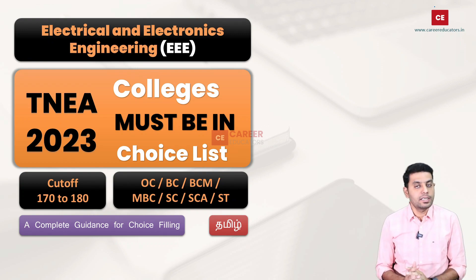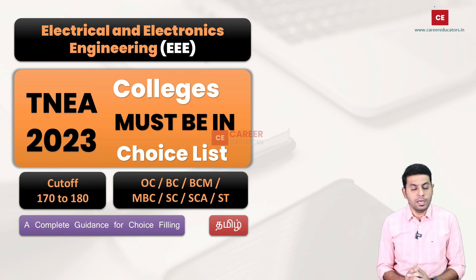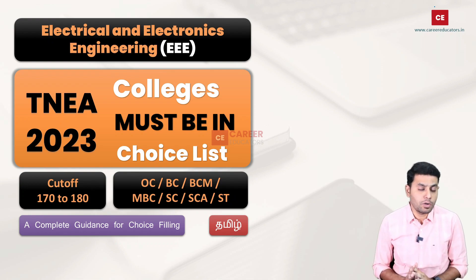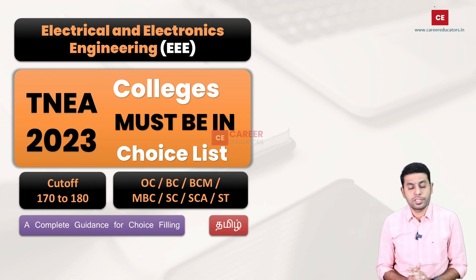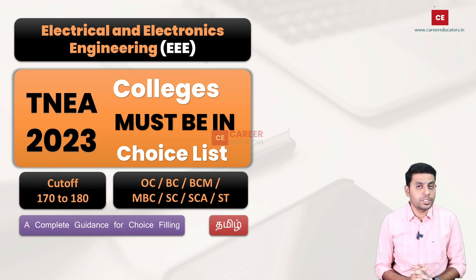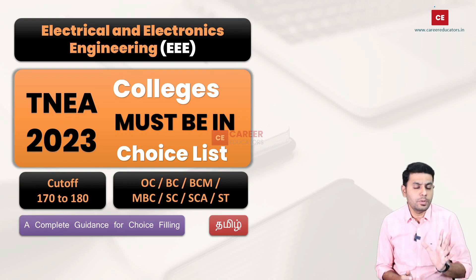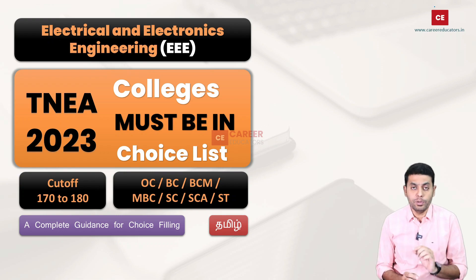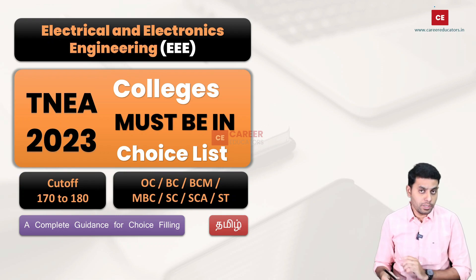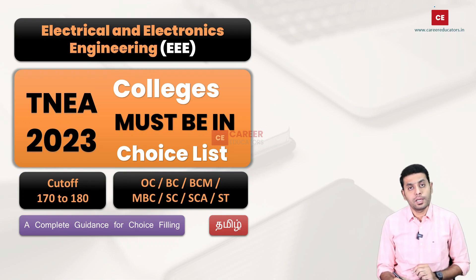If you have a choice list, you will definitely know what you need to do for your college. Whatever doubts you have, you can post them and I will help you. In this video, we will discuss what you need to do in a TNEA joint counseling plan if you have a cut-off in the 170-180 range.